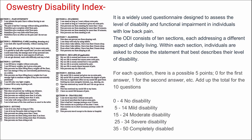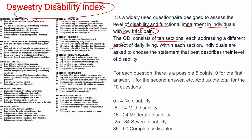Next is the Oswestry Disability Index, used to assess the level of disability and functional impairment among individuals with low back pain. It consists of 10 sections addressing different aspects of daily living, with responses graded 0 to 5 per section, yielding a total range of 0 to 50. Interpretation categories are no disability, mild, moderate, severe, and complete disability.